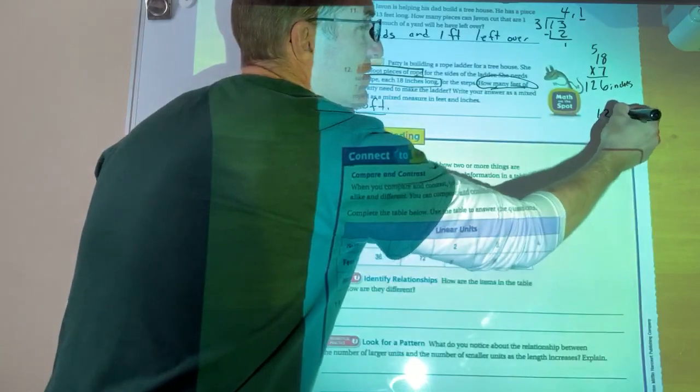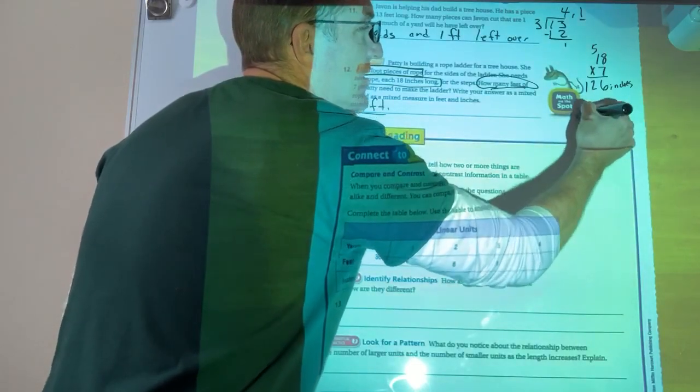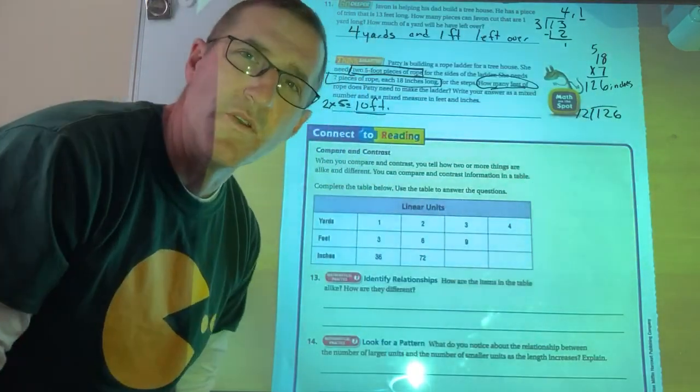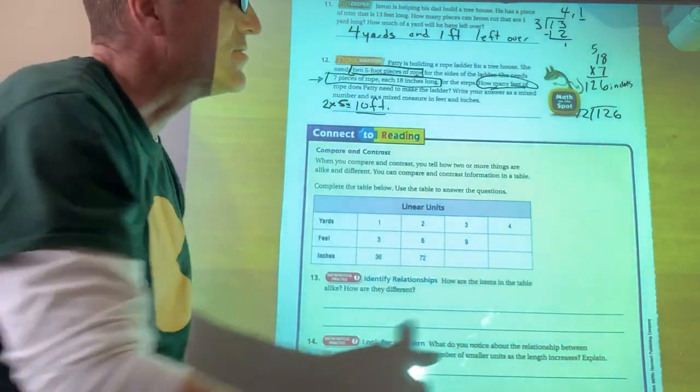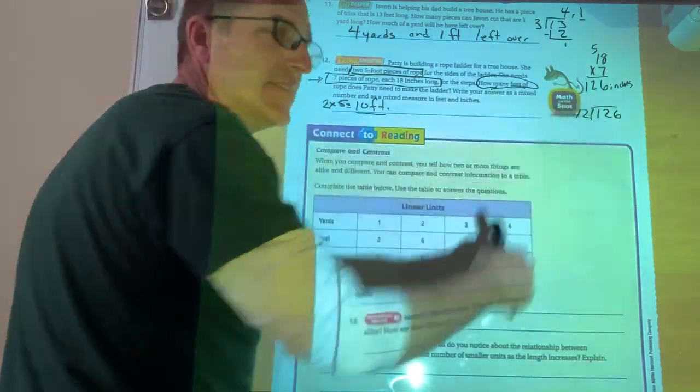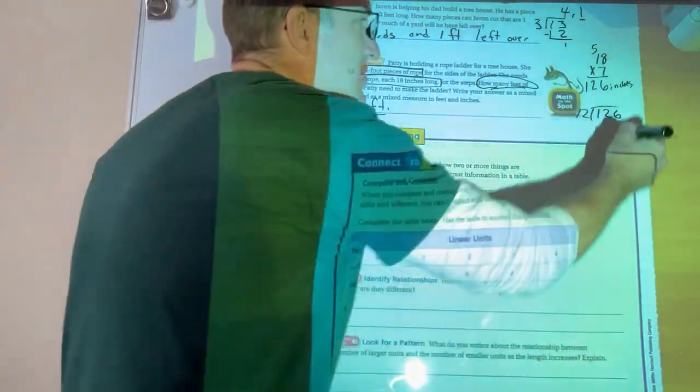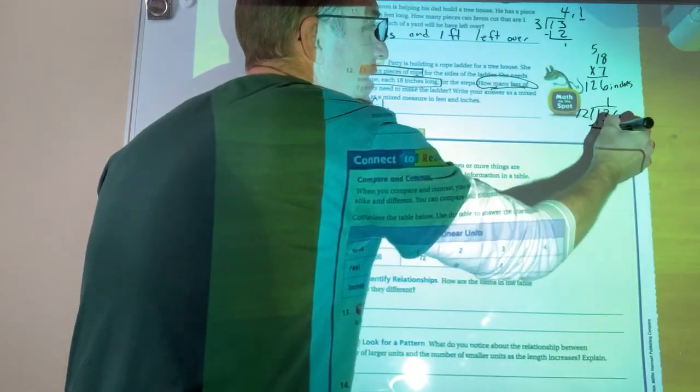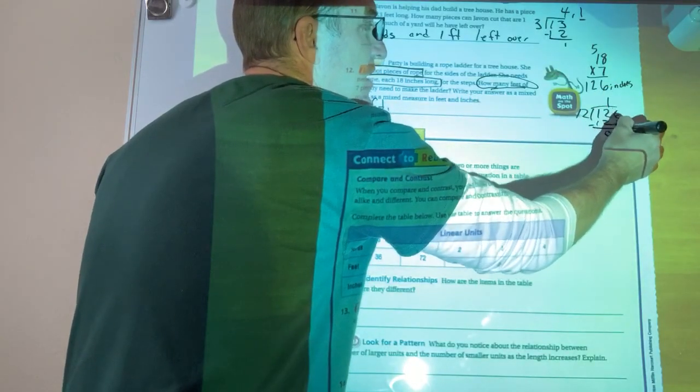So I'm going to take 126. I'm going to divide that by 12. Alright. Will 12 go into one? No, it won't. So will 12 go into 12? How many times? Once. Minus 12. I get zero, right? And I bring down my six.